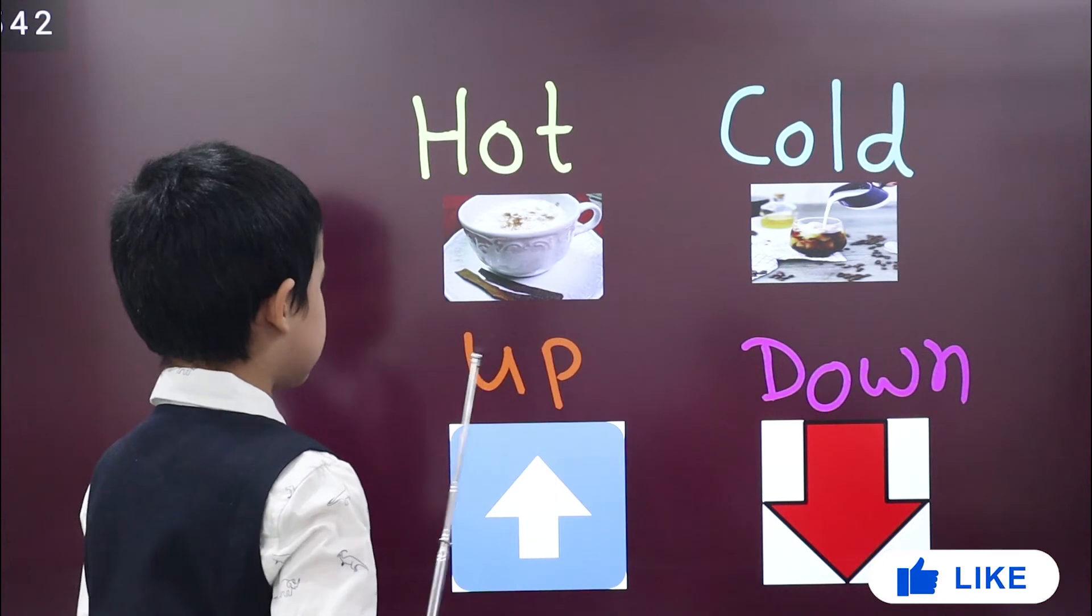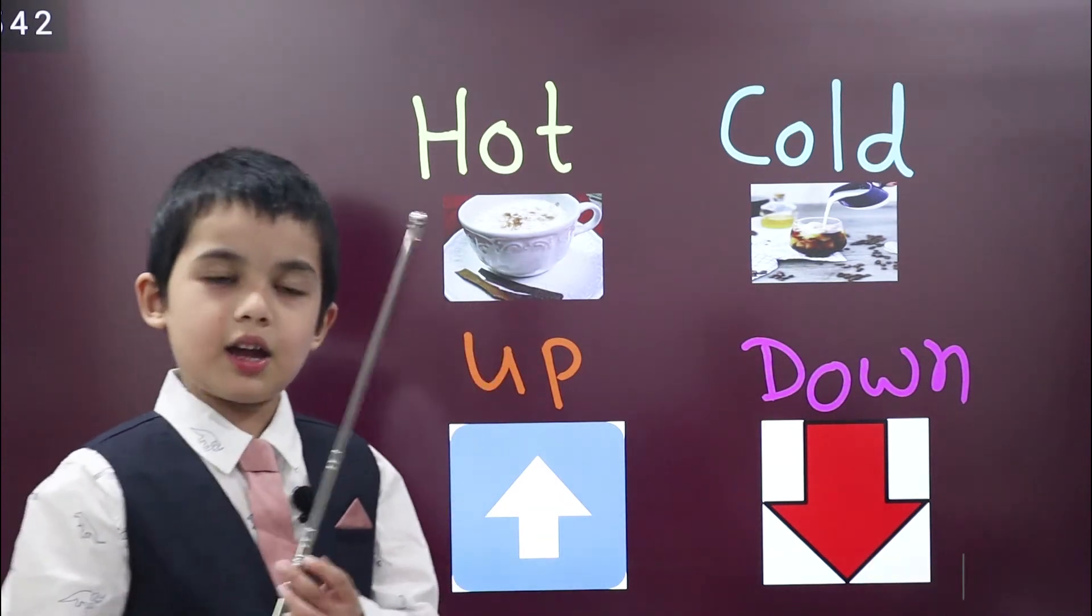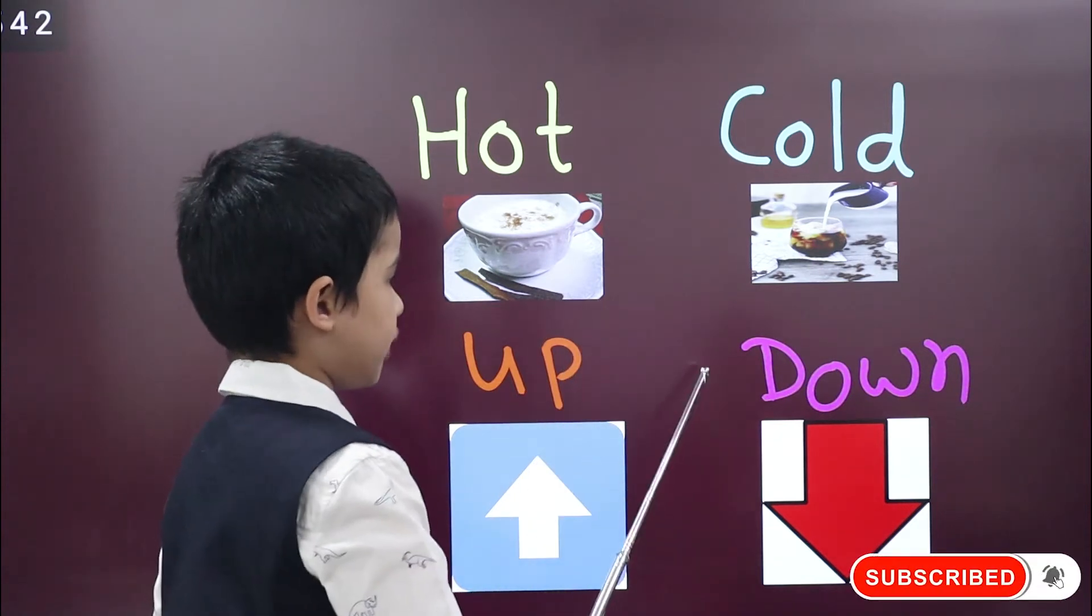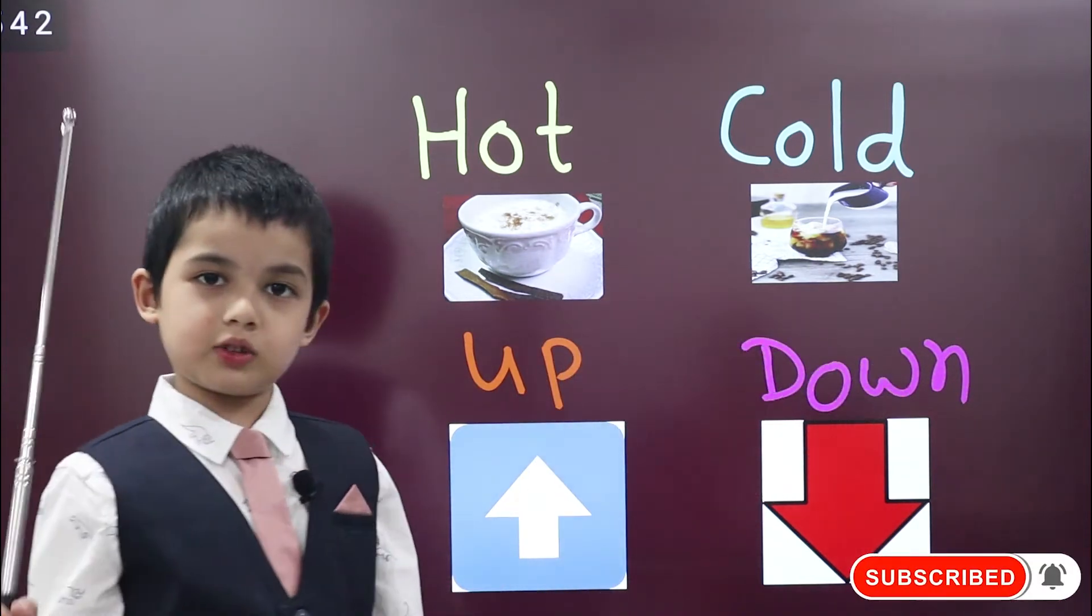This is next word, up. Arrow plane is going up. Opposite of up is down. Arrow plane is going down also.